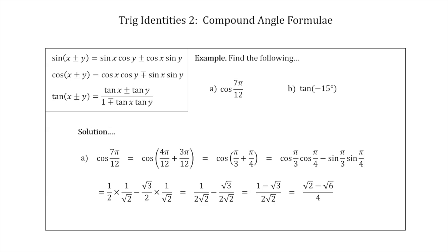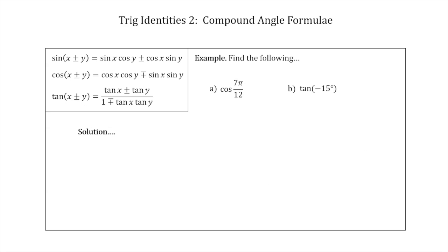Now for Example B: find tan(−15°). We rewrite −15° as the difference of two angles whose tangents we know from our exact triangles. We choose 45° − 60°, since 45 − 60 = −15 and we can calculate tan(45°) and tan(60°) without a calculator.